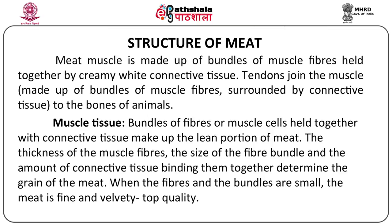The thickness of the muscle fibers, the size of the fiber bundles and the amount of connective tissue binding them together determine the grain of the meat, which is a very good indicator of the quality of meat. When the muscle fibers and muscle bundles are small, the meat is fine and velvety and is considered to be top quality meat.